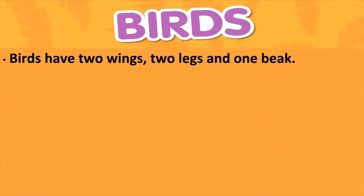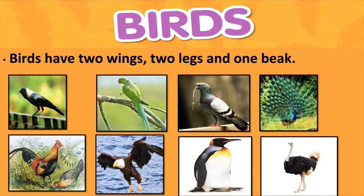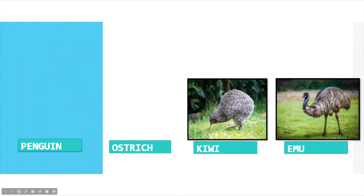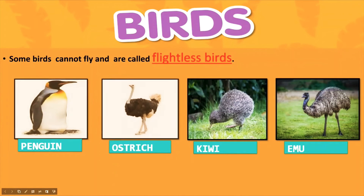Birds have two wings, two legs, and one beak. You can see all the pictures here — these are all birds. All of them have two wings, two legs, and one beak. Birds eat with their beak and have feathers all over their body. They lay eggs. There are some birds which do not fly, and they are called flightless birds.